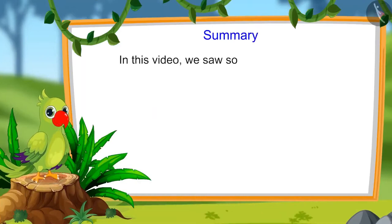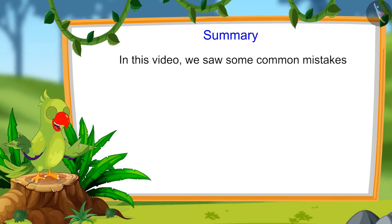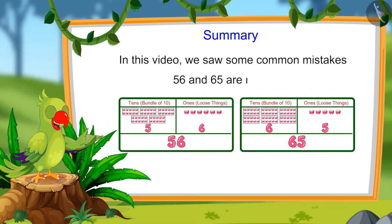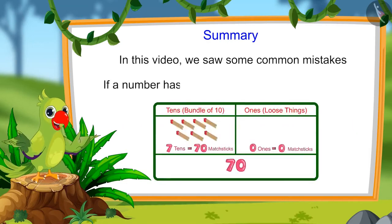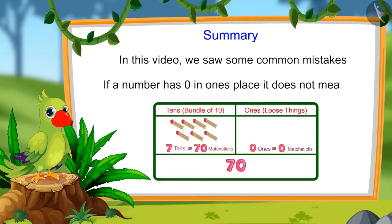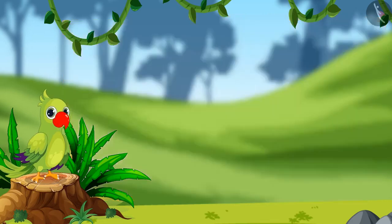So, children, that is all for today. In this video, we saw some common mistakes that we should avoid. For instance, 56 and 65 are not equal. And if a number has 0 in one's place, it does not mean 10. I sincerely hope that you have understood this topic. Bye, friends.